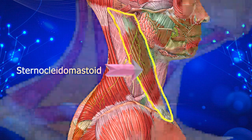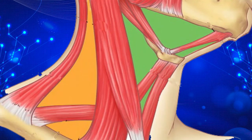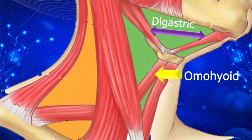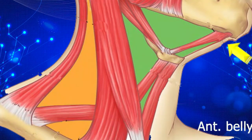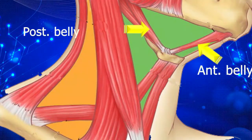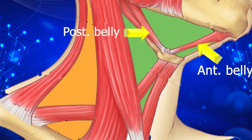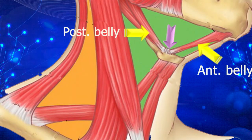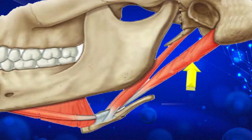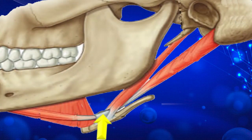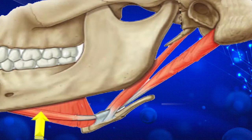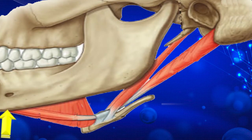Two other muscles that will play key roles are the digastric muscle and the omohyoid muscle. First, the digastric muscle. This muscle has two bellies, the anterior belly and the posterior belly. Both bellies are joined by an intermediate rounded tendon at this point. This common tendon is connected to the hyoid bone. The posterior belly takes its origin from the mastoid process and stops at the intermediate tendon. The anterior belly takes its origin from the intermediate tendon and stops at the digastric fossa seen in the lower border of the body of the mandible.